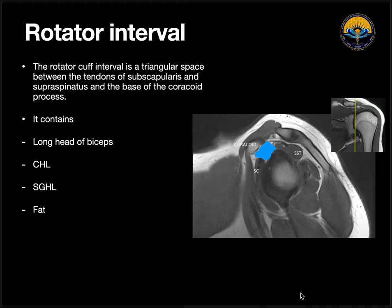Coming to the rotator interval, it is a triangular space between supraspinatus, subscapularis, and the coracoid. This area is the rotator interval. It contains the coracohumeral ligament, the superior glenohumeral ligament, fat, and the long head of the biceps tendon.